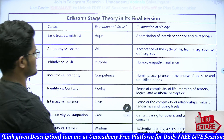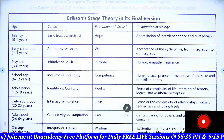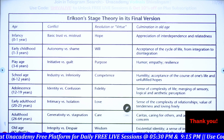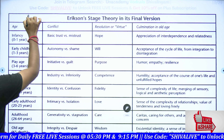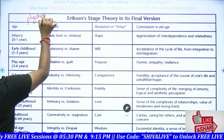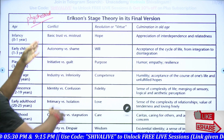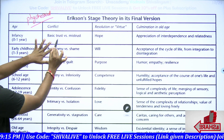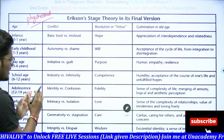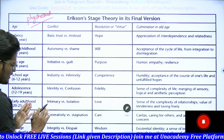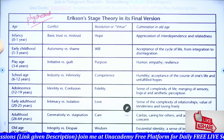Let's look at the entire Erikson stage theory chart in its final version. If you look carefully, you can easily relate to what the theory is saying. This is a psychosocial development theory — how a person reacts at each age of life. The eight stages given by Erikson are: trust versus mistrust, autonomy versus shame, initiative versus guilt, industry versus inferiority, identity versus confusion, intimacy versus isolation, generativity versus stagnation, and integrity versus despair. These are the eight conflicts of psychosocial development.